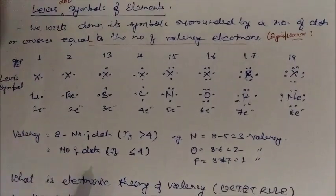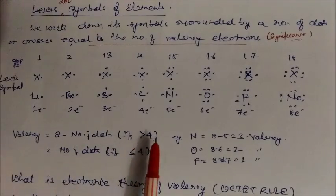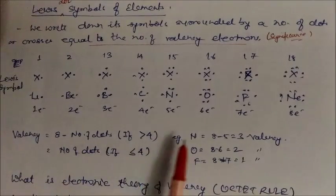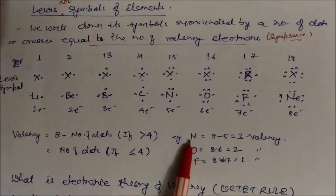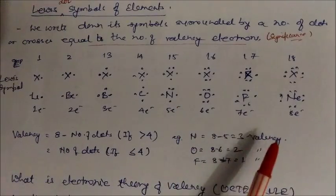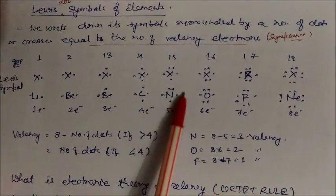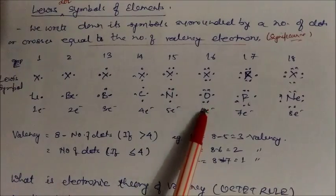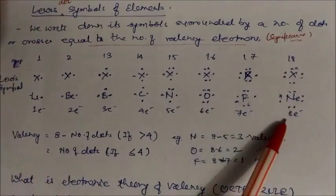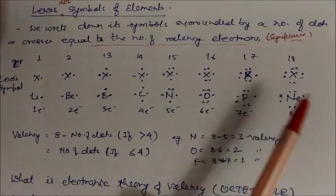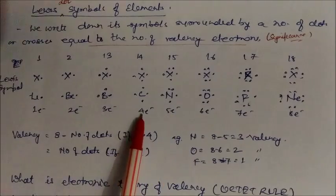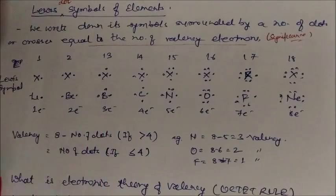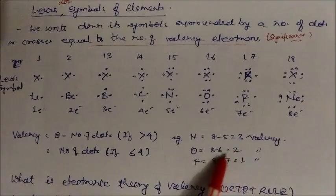Valence is calculated as follows: if the number of valence electrons is 4 or less, the number of dots equals the valence. If more than 4, valence = 8 minus the number of valence electrons. For example, nitrogen has 5 valence electrons, so valence = 8 − 5 = 3. Oxygen has 6 electrons, so valence = 2. Fluorine: 8 − 7 = 1. Noble gases have valence 0. Chlorine: 8 − 7 = 1 valence.